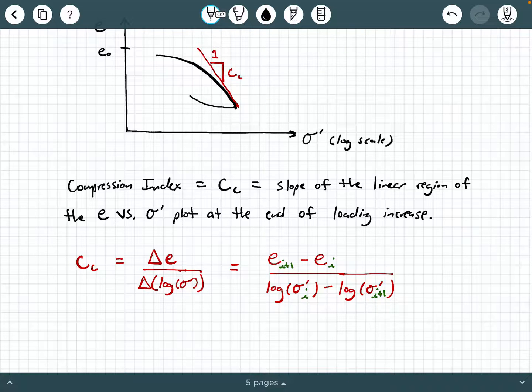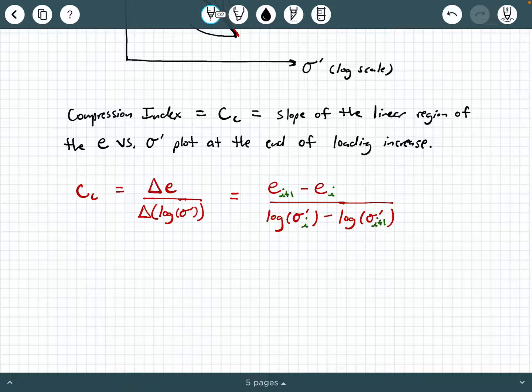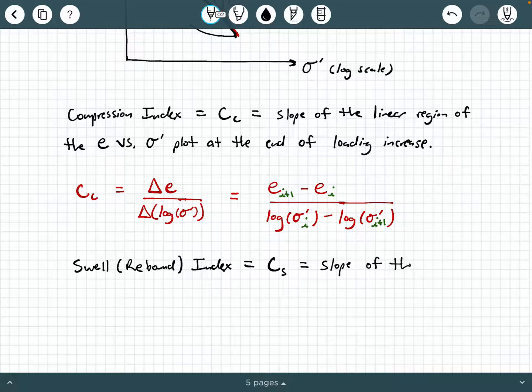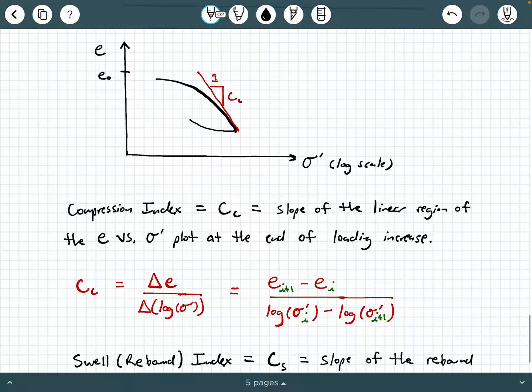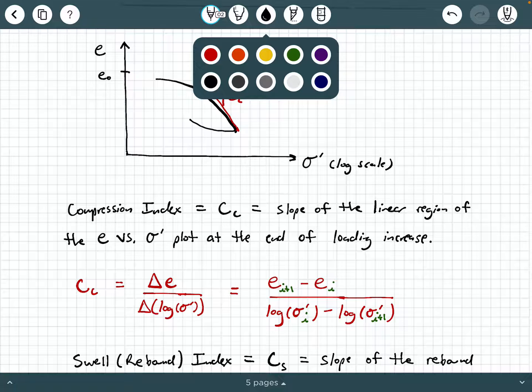The next important property we're going to learn how to calculate from this data is what's called the swell or rebound index. And that's going to be labeled as C sub S. And this is the slope of the rebound curve on the e versus sigma prime plot.